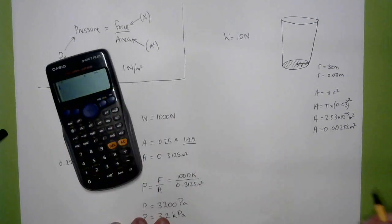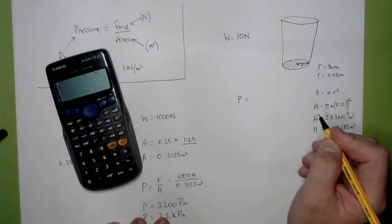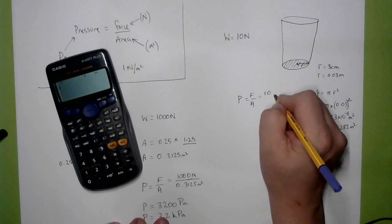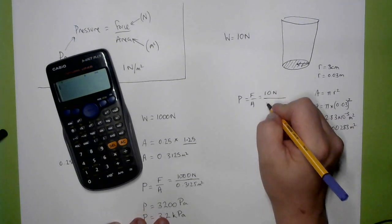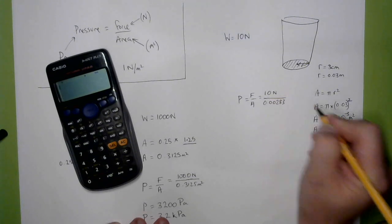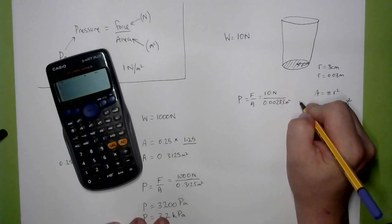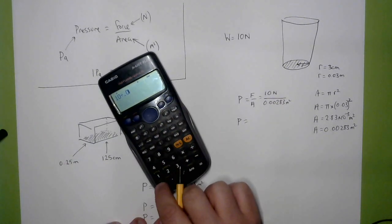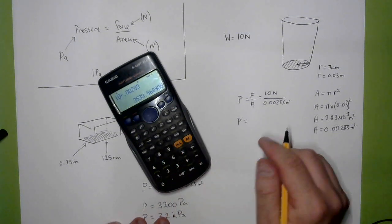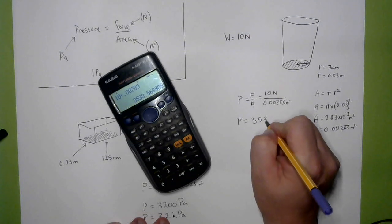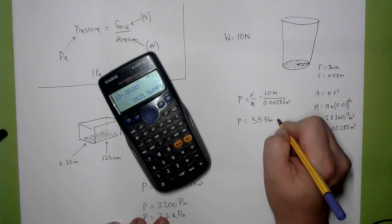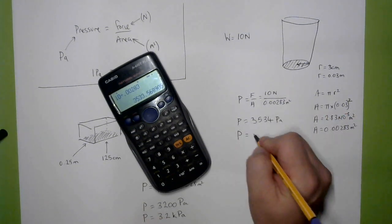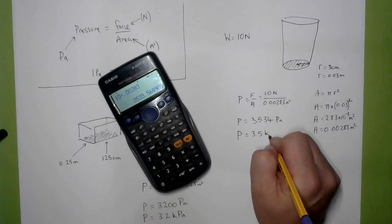So the pressure that this cup exerts on the floor, pressure equals force over area, is 10 Newtons divided by an area, 0.00283 square metres. 3,533, 534 pascals. So the pressure that the cup exerts is 3.5 kilopascals.